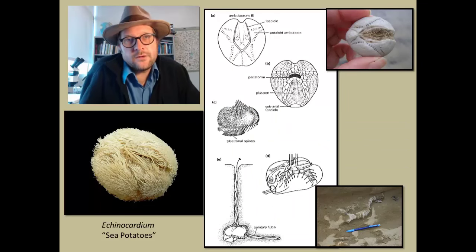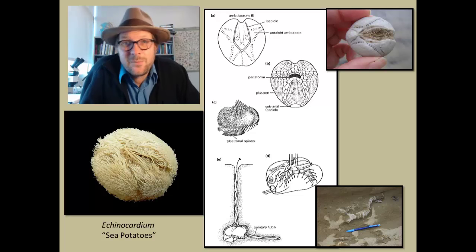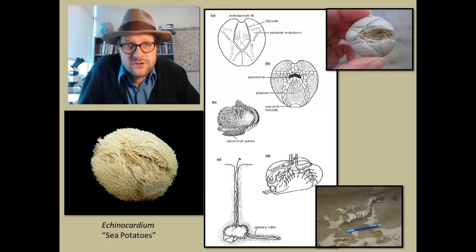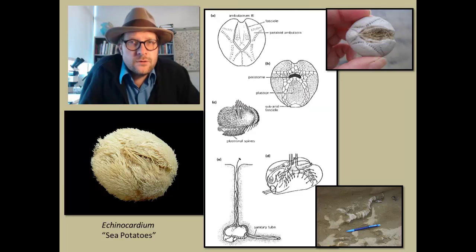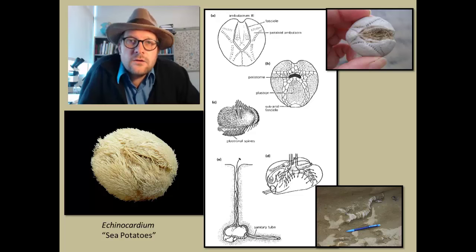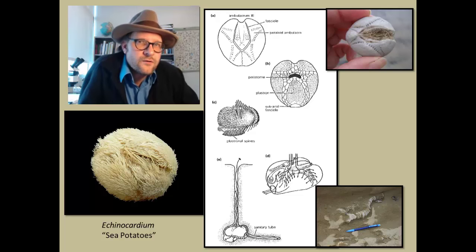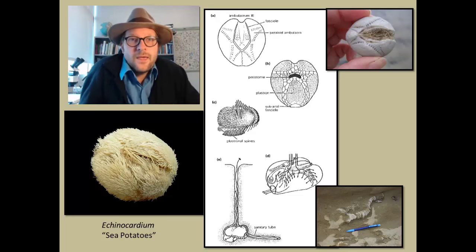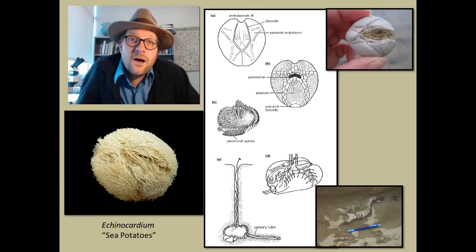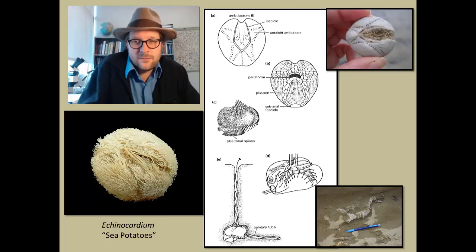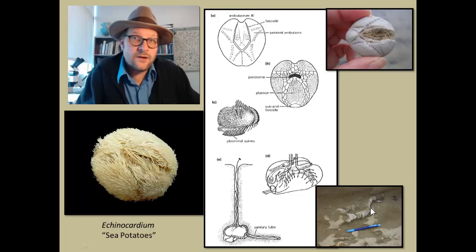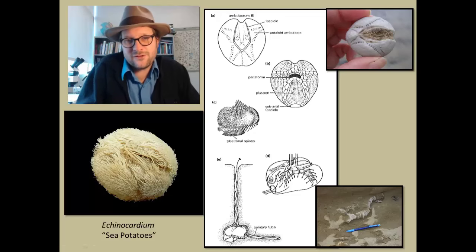One of the most bizarre echinozoans are the sea potatoes, Echinocardium. These are creatures that live completely underground, filtering out food using their extended tube feet. They lack lanterns as adults and use their tube feet to acquire food in their burrows. They leave behind complex traces that can be identified in the fossil record, since their skeletons are often found within these burrow-like structures.